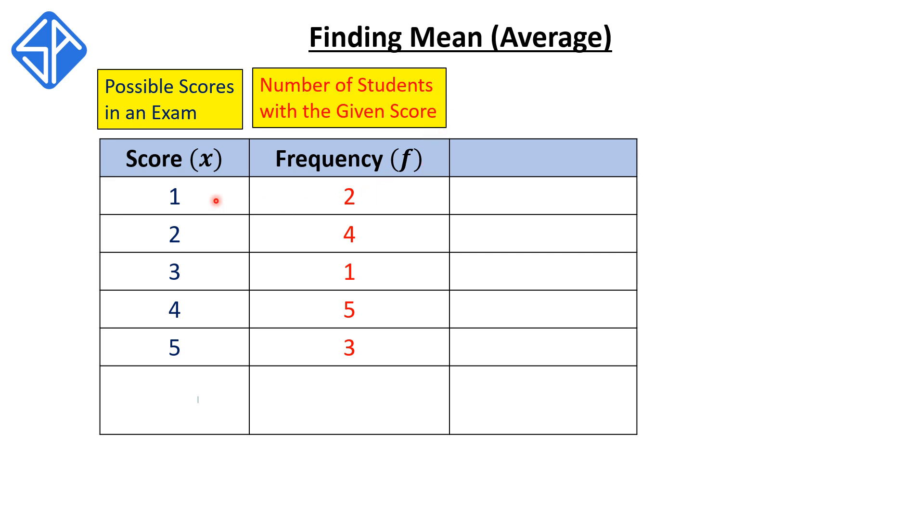For example, the score of 1 corresponds to a frequency of 2. This means that 2 students in the class got a score of 1. The score of 2 corresponds to a frequency of 4. This means that 4 students in the class got a score of 2.